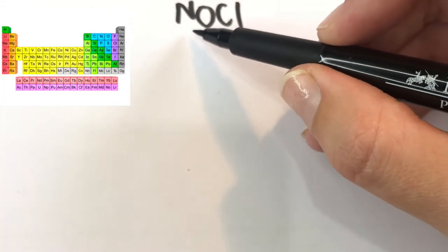So now we're looking at nitricyl chloride or NOCl and it's starting to get a little bit more complicated, but we are just following those exact same rules that we used for our other three Lewis diagrams.